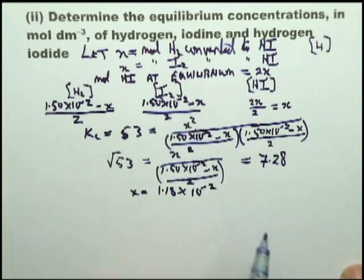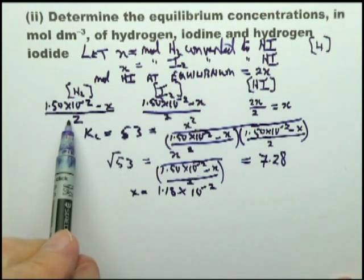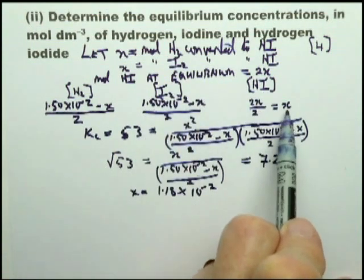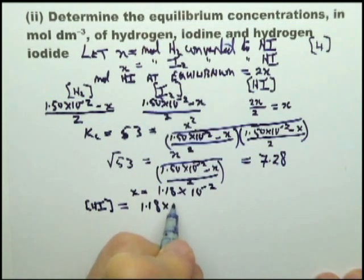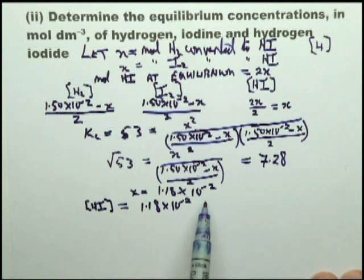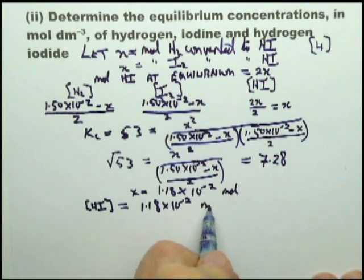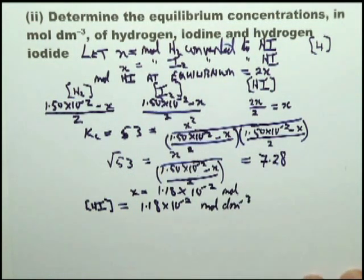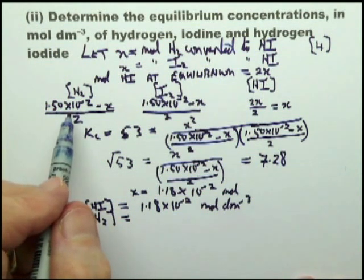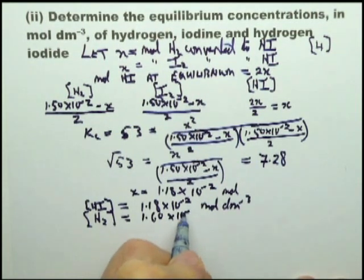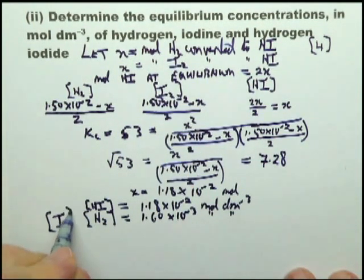So then I go back to these. I now know the concentration of hydrogen at equilibrium, the concentration of iodine, and the concentration of HI. The concentration of HI equals 1.18 × 10⁻². Notice the x originally is moles, but now this number is the concentration of HI, mole decimeter⁻³. Then I worked out the concentration of hydrogen, which works out to 1.60 × 10⁻³ mol dm⁻³. And I realize that iodine is the same. That is the answer.